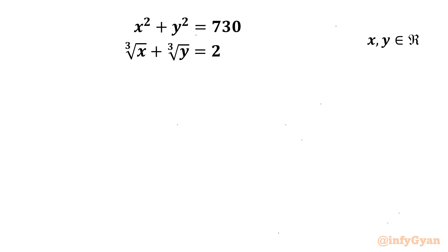Welcome to Infigyan friends. In today's video we are having a very interesting system of equations problem. We have x squared plus y squared equal to 730, and cube root of x plus cube root of y equal to 2. We have to find out the real values of x and y.